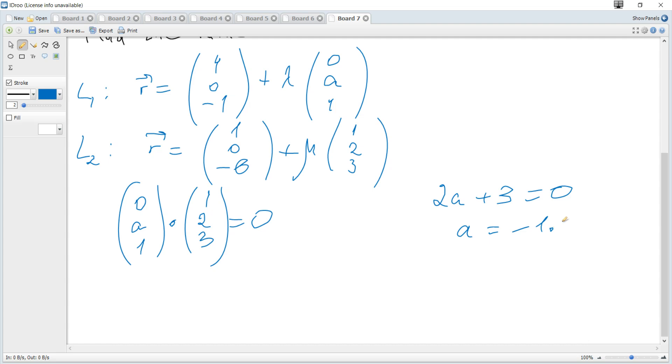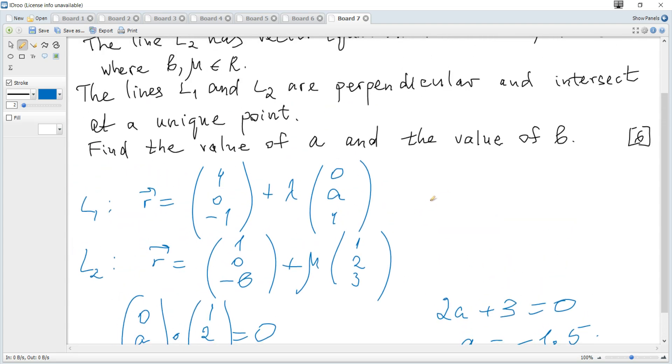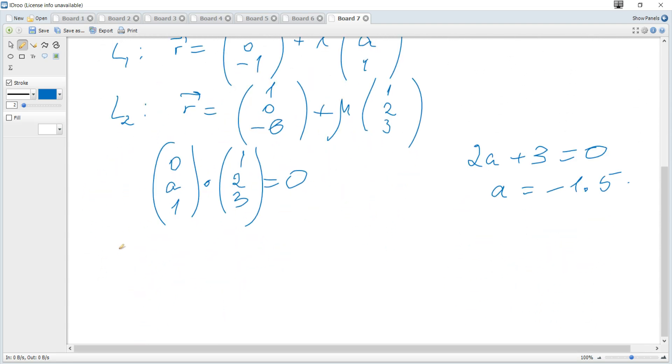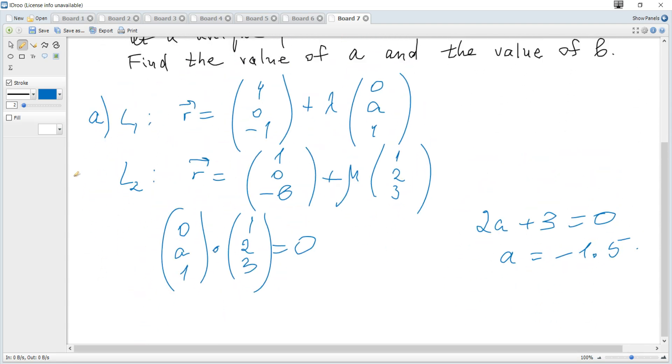So A is negative 1.5. And two lines intersect at a unique point, so we can set up simultaneous equations.